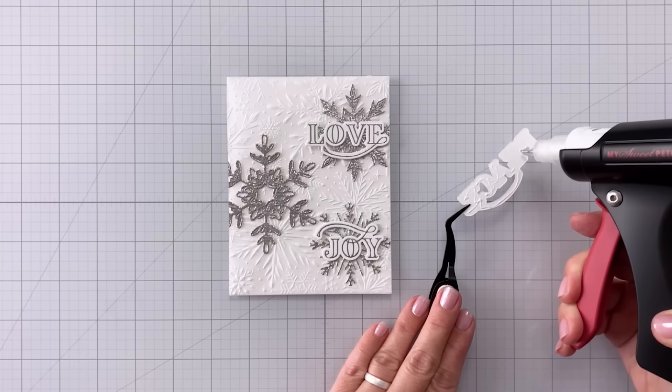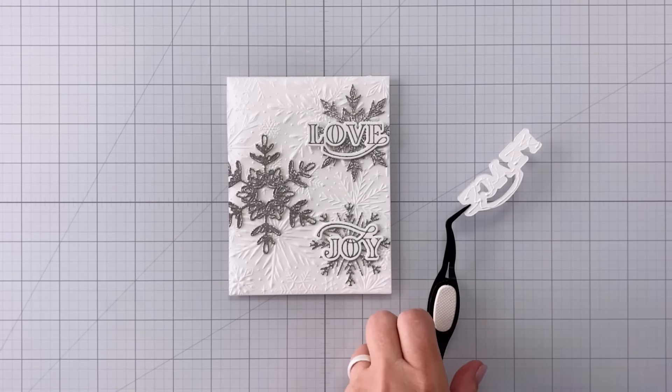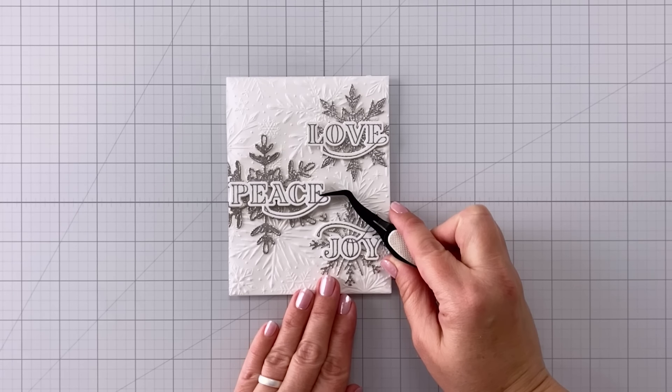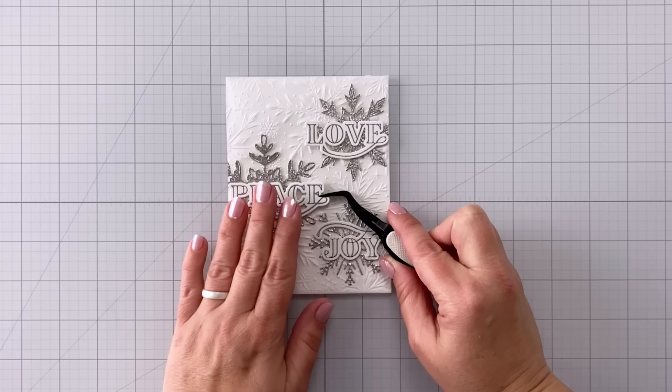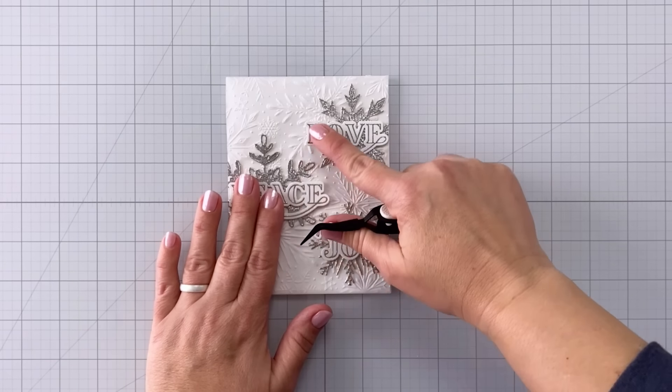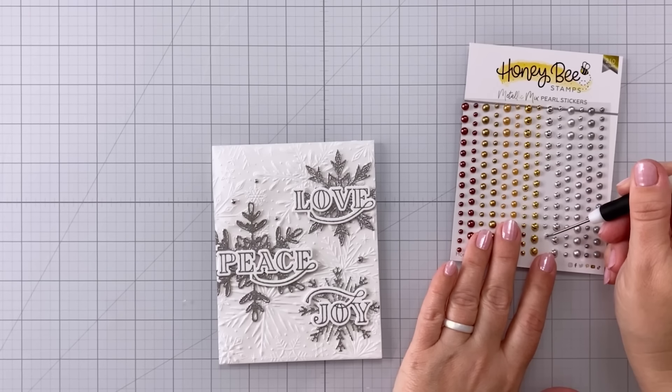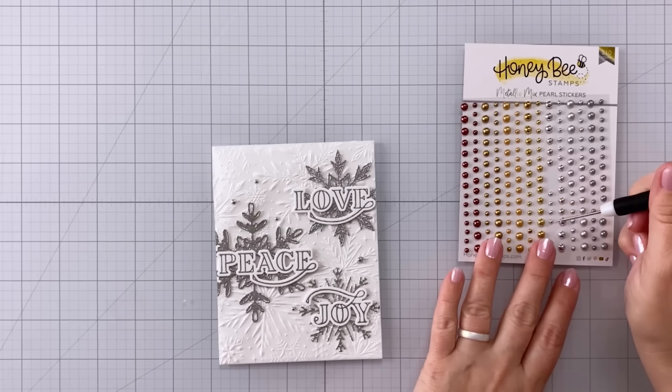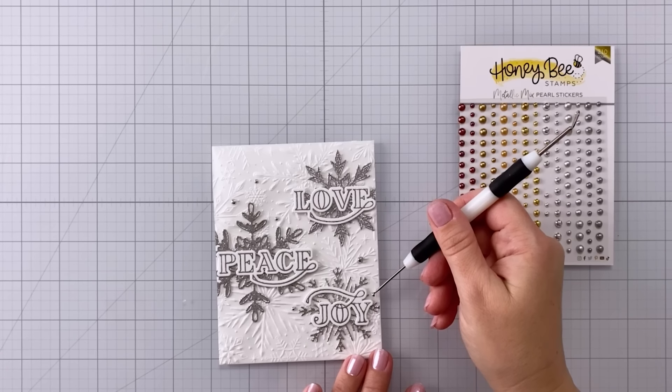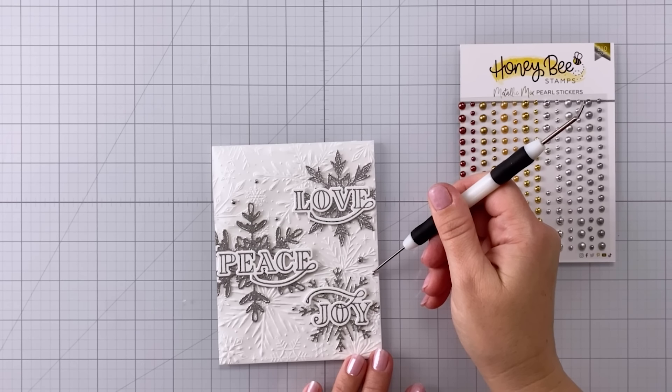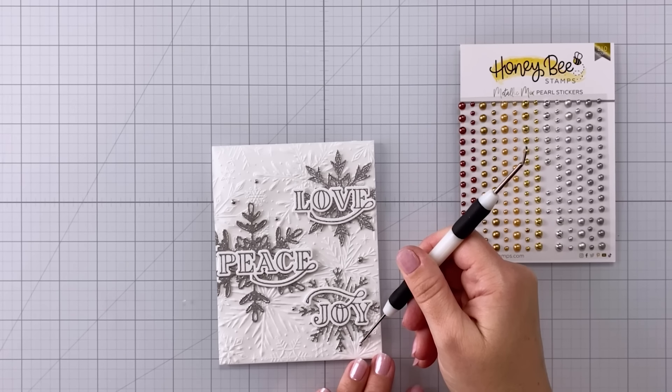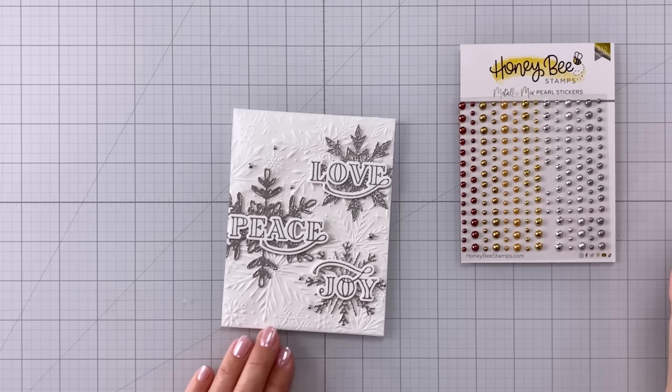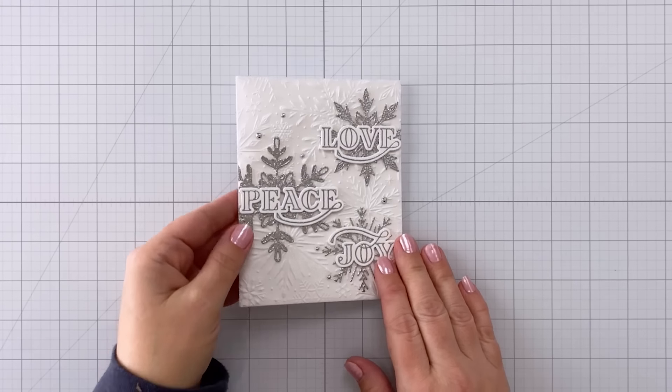So I decided to go ahead and put the sentiments over the tops of the snowflakes. You could also put them in the little areas where the snowflakes aren't but I thought it would look really pretty to have that repeating triangle with the sentiments in the exact same spot where those snowflakes are. Last but not least I'm going to bring in some bling and I'm going to use the metallic mix pearl stickers. These are really beautiful and shiny silvers and golds. I've used some of the smaller ones placed them here and there around on the card so that they are also in triangle formations and that finishes off the card.